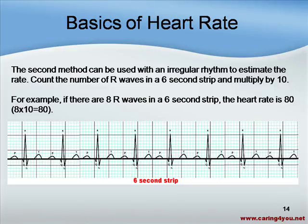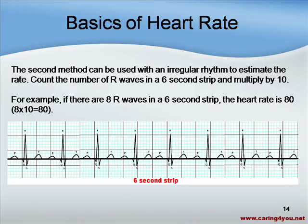When the rhythm of the heart is irregular, we use the 6-second method to estimate the rate. To figure it out, you count the R-to-R intervals in a 6-second strip and then multiply by 10. In this example, there are 8 R intervals. We take the 8, multiply it by 10, and arrive at an estimated 80 beats per minute. Both of these methods are just estimations.